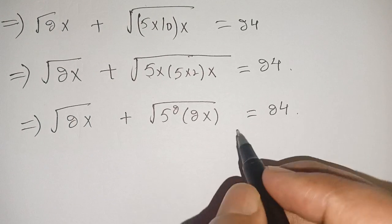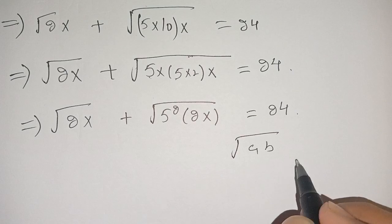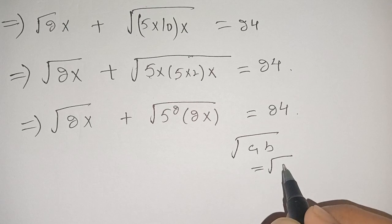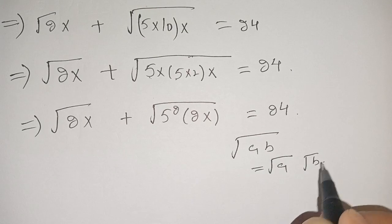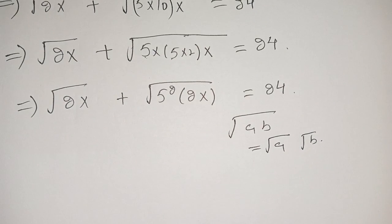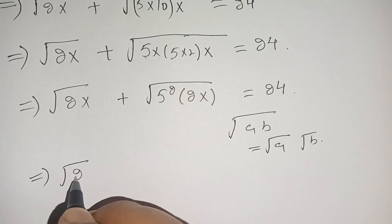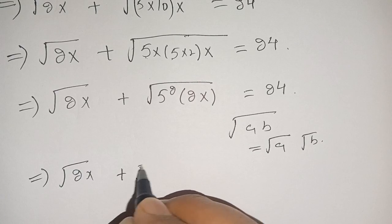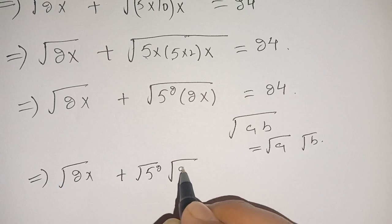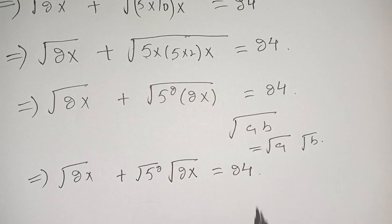We know that the square root of a times b can be written as square root of a times square root of b. Now applying this identity, we can write this as square root of 2x plus square root of 5 squared times square root of 2x is equal to 24.